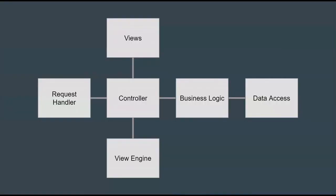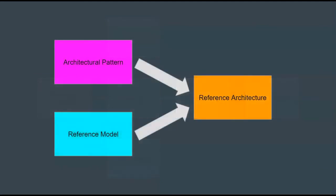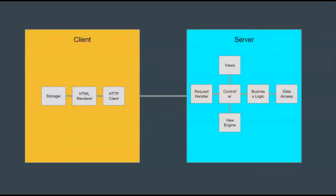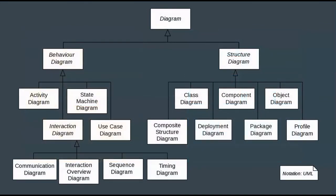Next are the reference models. These are objects important to the domain or the day-to-day use of the system. For example, in our web server example, a reference model might be a controller, view engine, HTTP request handler, and so on. Next, a reference architecture combines both the architectural pattern and the reference model. So in this example for our web server, if you combine the client-server pattern with the reference model, you get a reference architecture for our web server. If you take a reference architecture and add additional implementation details — like how it is deployed, what the classes look like, and so on — you'll eventually come up with a software architecture.